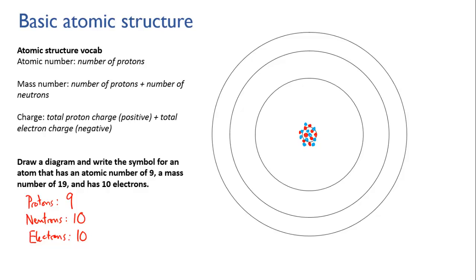Now we have 10 electrons to distribute. We know that the first electron level can hold 2 electrons, so we'll put 2 in there. And we know that the next electron level can hold 8. We've used 2 in the first level, so the remaining 8 will all go in the second level.